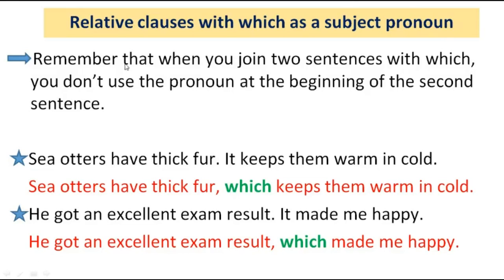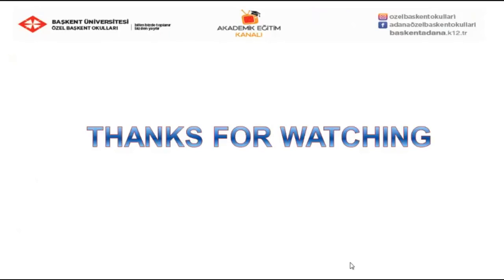So as to understand this part properly, let's look at the examples. Sea otters have thick fur. It keeps them warm in the cold — becomes: Sea otters have thick fur, which keeps them warm in the cold. He got an excellent exam result. It made me happy — becomes: He got an excellent exam result, which made me happy. Thanks for watching.